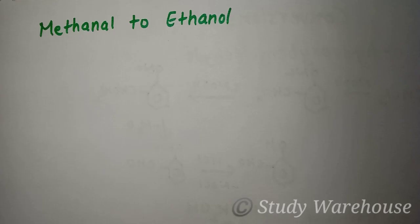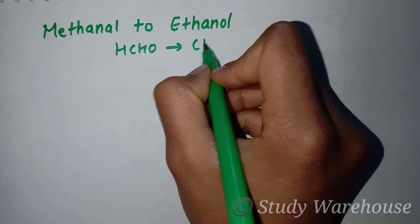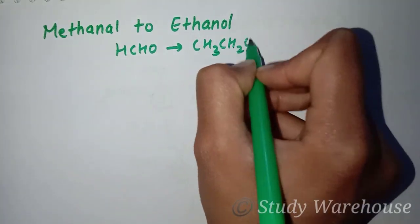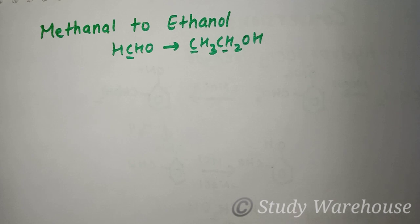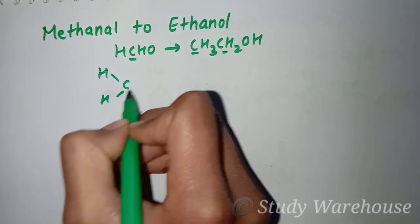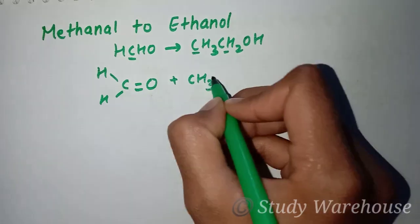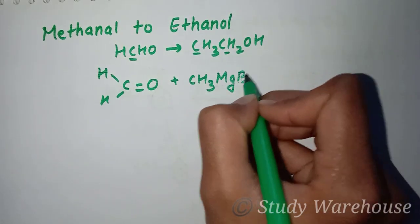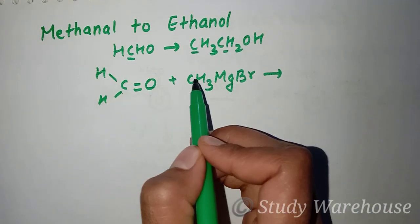We have to convert methanol to ethanol, which means HCHO to CH3CH2OH. Here is only one carbon and here is two carbons. In this conversion we use Grignard reagent. We will use CH3MgBr because we only need two carbons.